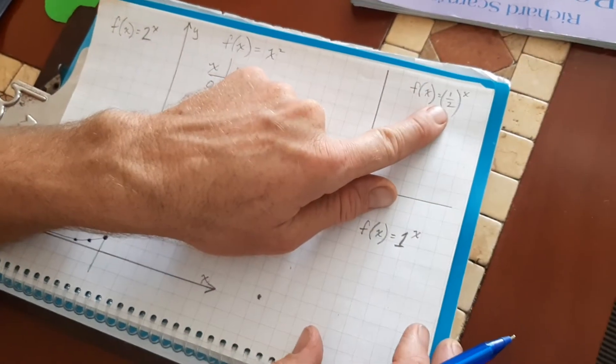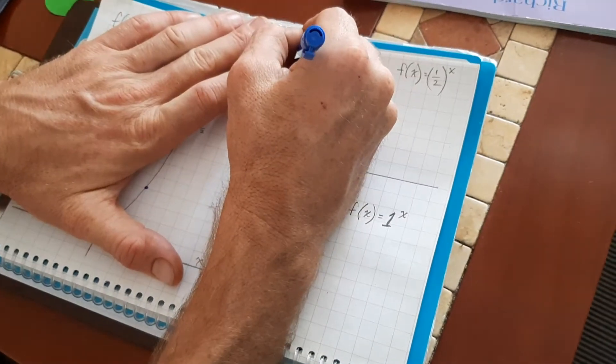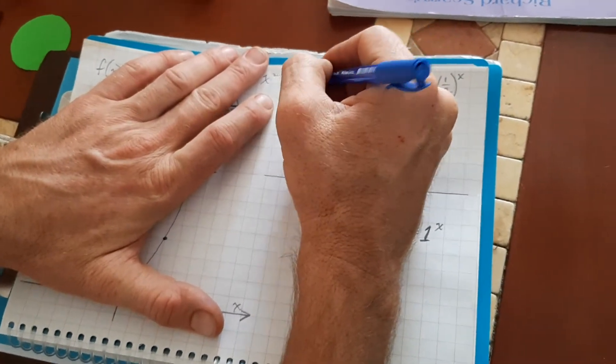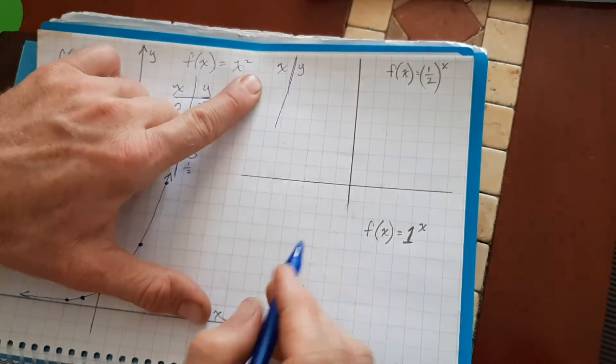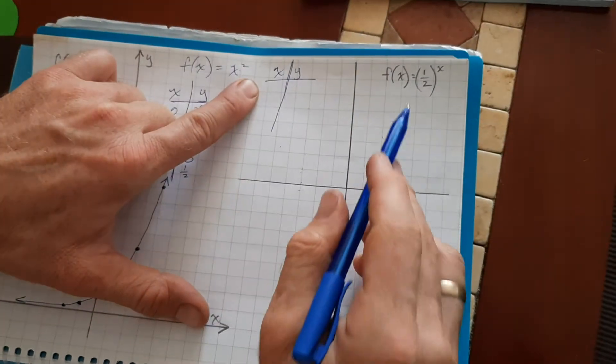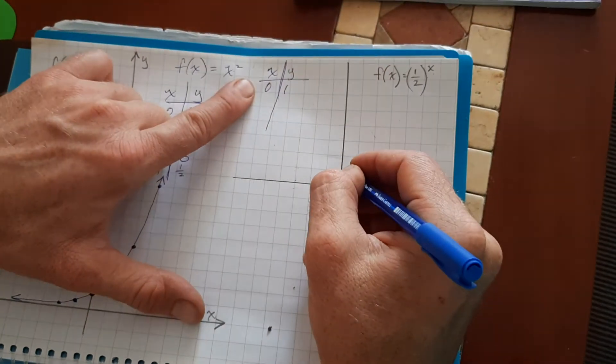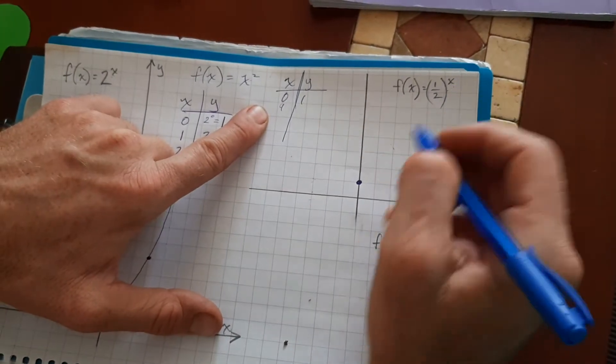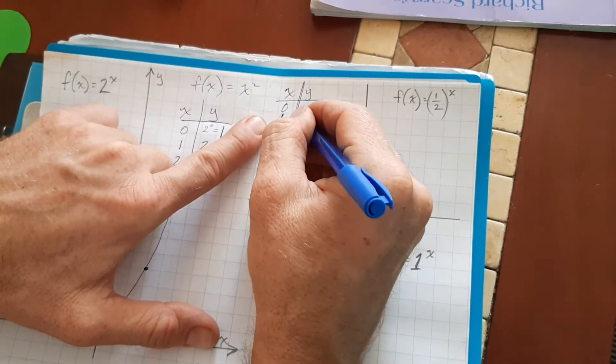Let's do a fraction smaller than one and see what happens real quick. Put in a zero for x. Once again, I get one. Zero comma one. It has that point in common. One. One half to the one power? One half. One comma one half.